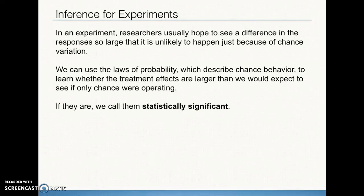Any time we run an experiment, we want to see what the effect is and what the comparison tells us about the differences in the treatment. We're always looking to see whether the results are statistically significant. Statistically significant means an observed effect so large that it would rarely occur by chance alone — it is unlikely to happen by chance and more likely to be the result of whatever the treatment was. This is an idea we'll carry throughout the rest of the year, so it's important to have a good understanding of that definition now.